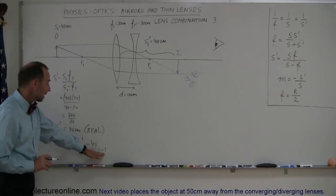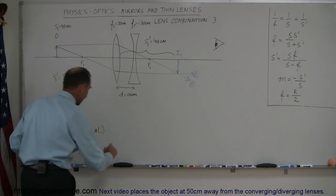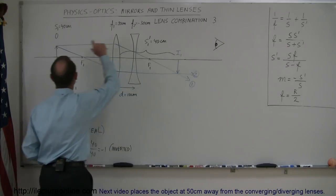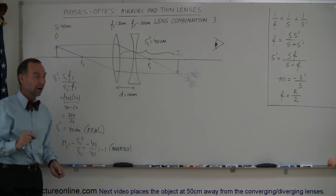What that says is that the image is inverted but the size is exactly the same as the object that caused it. So the size of the image is the same as the size of the object, at least for object 1 and image 1.